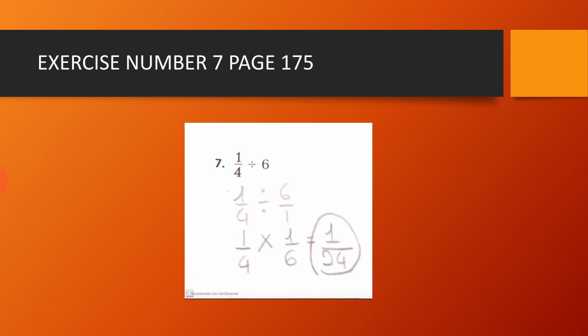Exercise number 7, page 175. We have 1 over 4 divided by 6. We write the 6 as a fraction, so it becomes 1 over 4 divided by 6 over 1. Then we use the rule: keep, change, flip. So 1 over 4 times 1 over 6. 1 times 1 equals 1, and 4 times 6 equals 24. So the result is equal to 1 over 24.